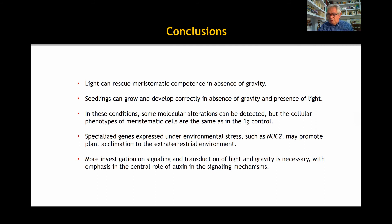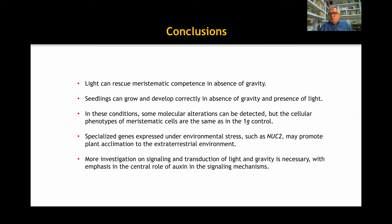As shown by other experiments carried out at real and simulated microgravity, if the growth conditions are optimal in terms of the supply of nutrients, temperature and humidity, plants present correct growth in their first stages of development. Despite that, molecular alterations are still compatible with the expected adaptation mechanisms involving the modulation of duplicated and specialized genes expressed under environmental stress, such as nucleolin 2, that should be promoted to increase plant acclimation to a new extraterrestrial environment. Therefore, in order to go deeper in our knowledge of the crosstalks between these two environmental signals, future experiments for cues on signaling and transduction of both cues are necessary.